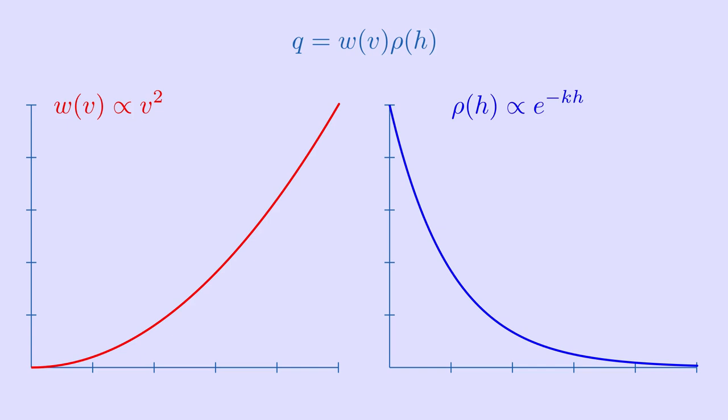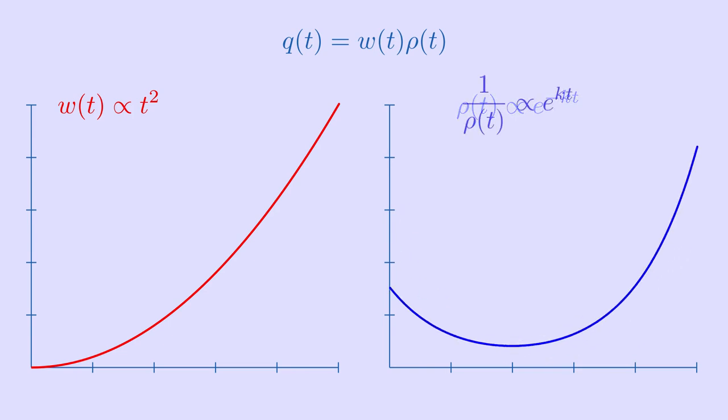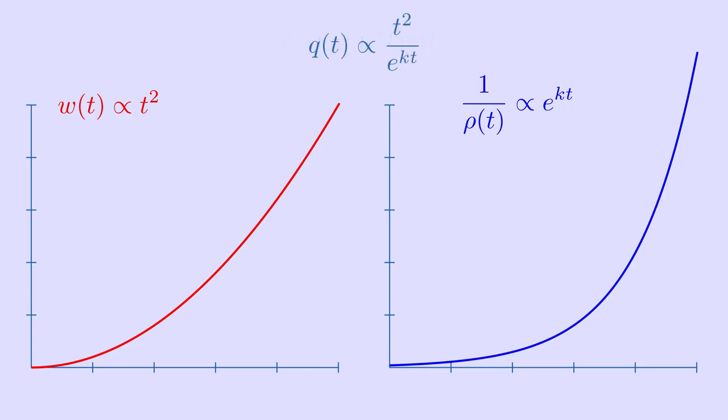As a first approximation, let's say that both the speed and altitude are proportional to time. In this case, the speed term is a polynomial, and multiplying by an exponential decay is the same as dividing by an exponential. Our dynamic pressure is then in the f of x over g of x form that we've seen before.